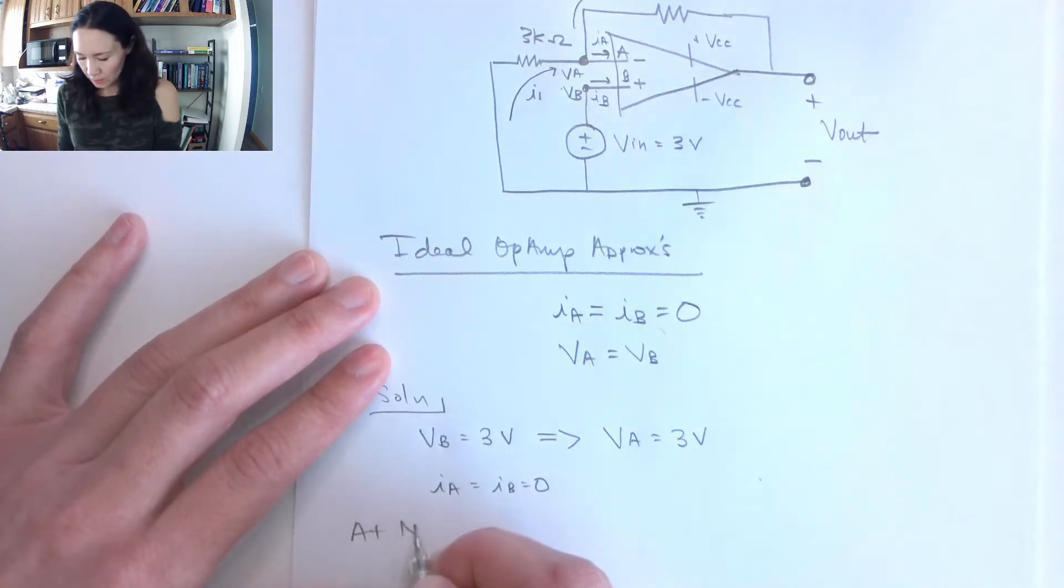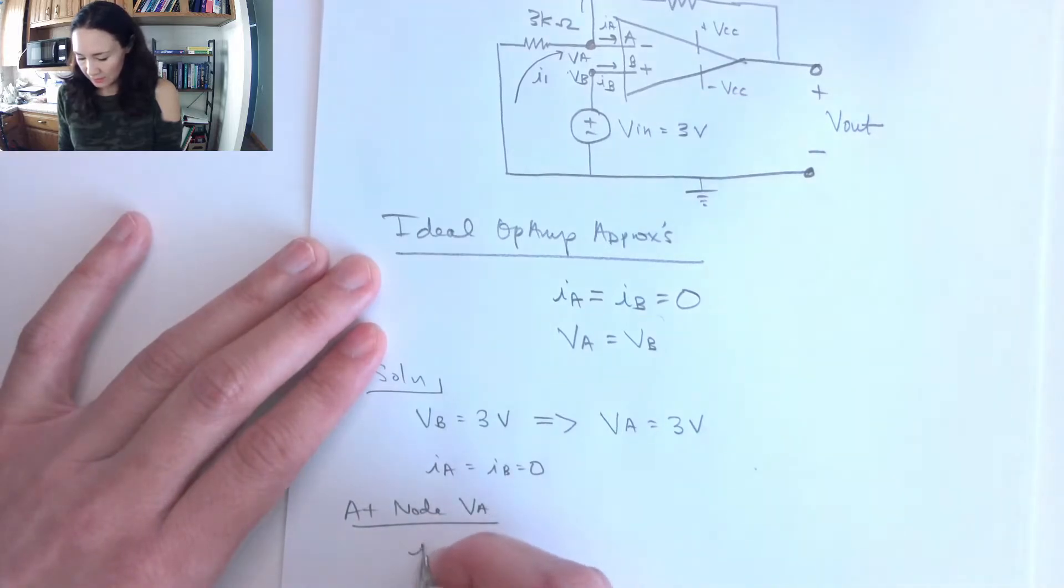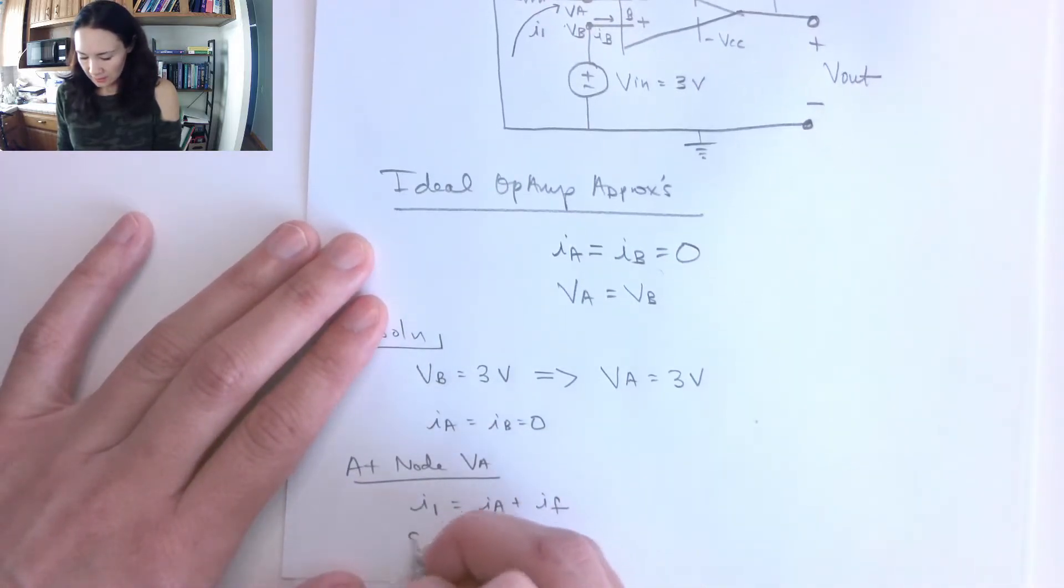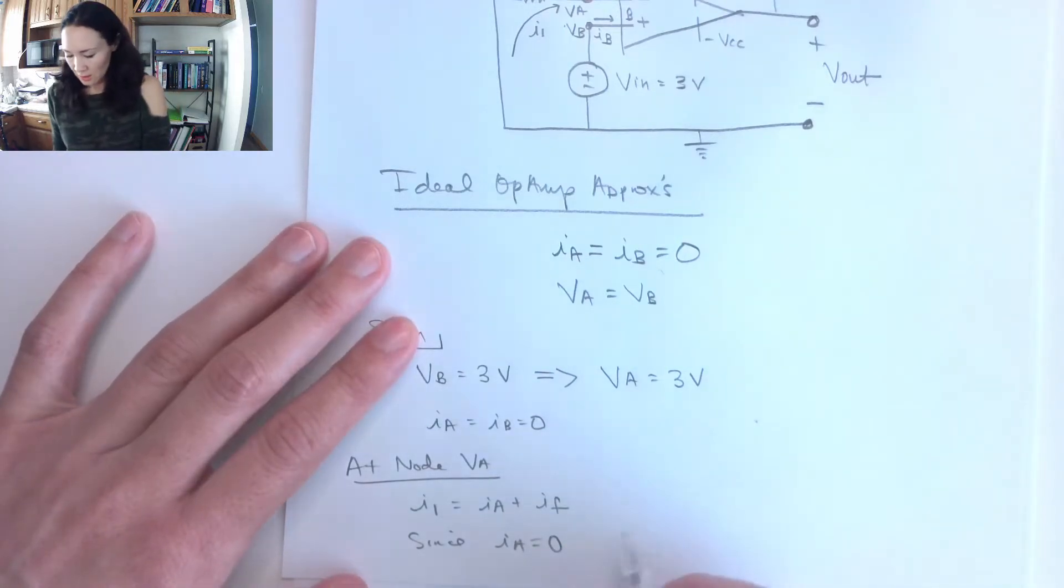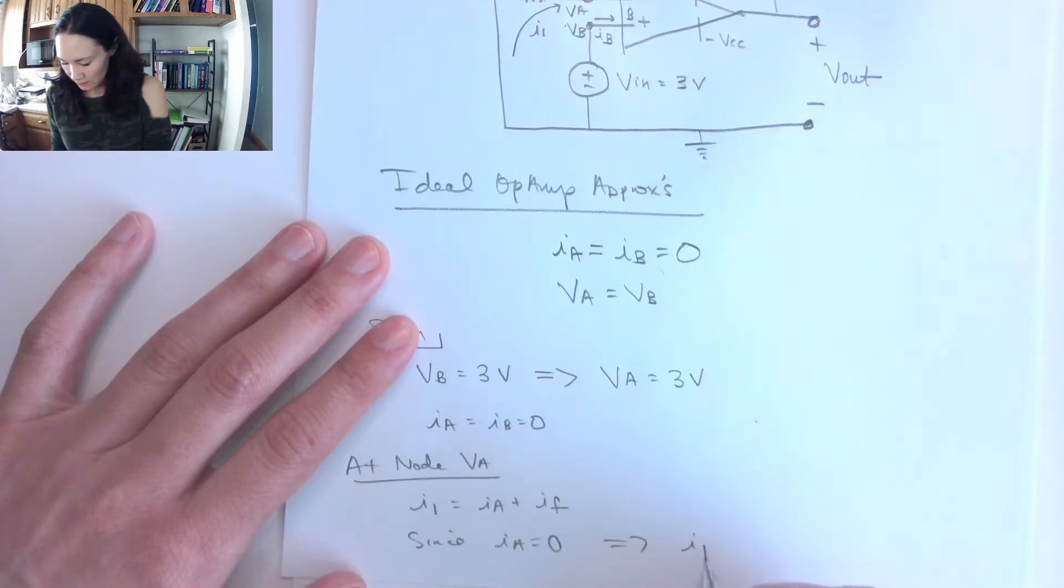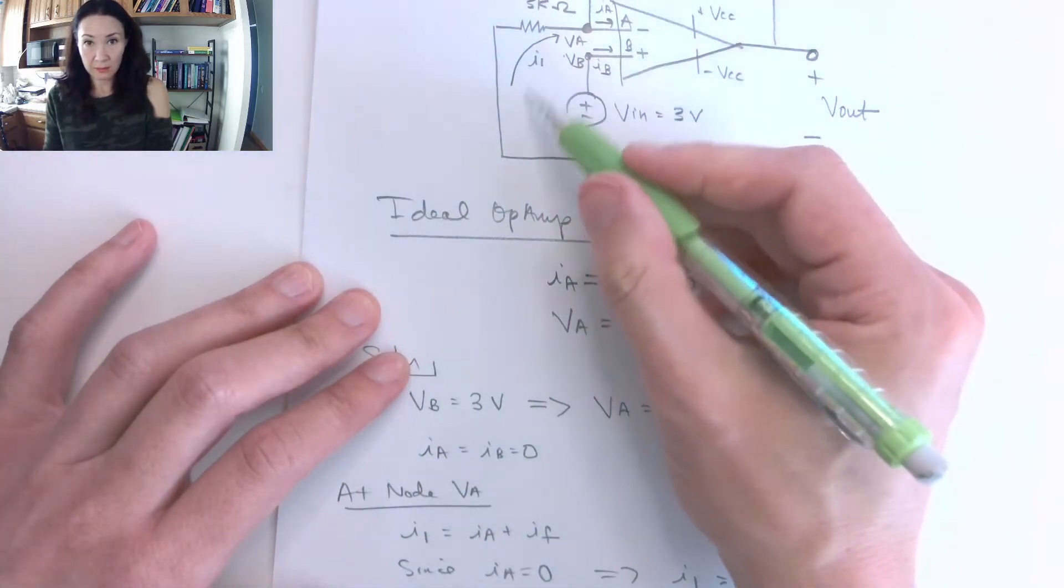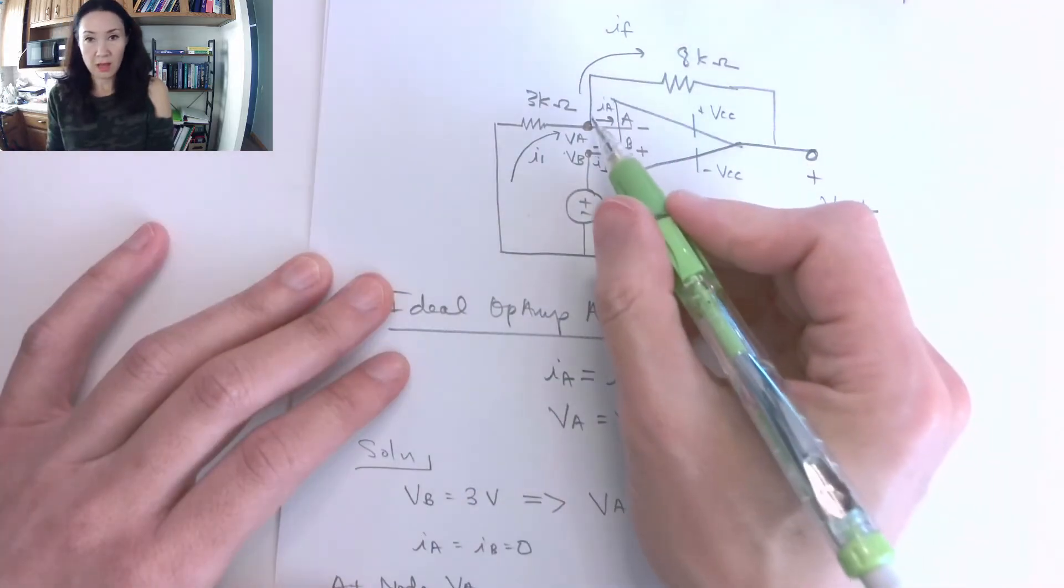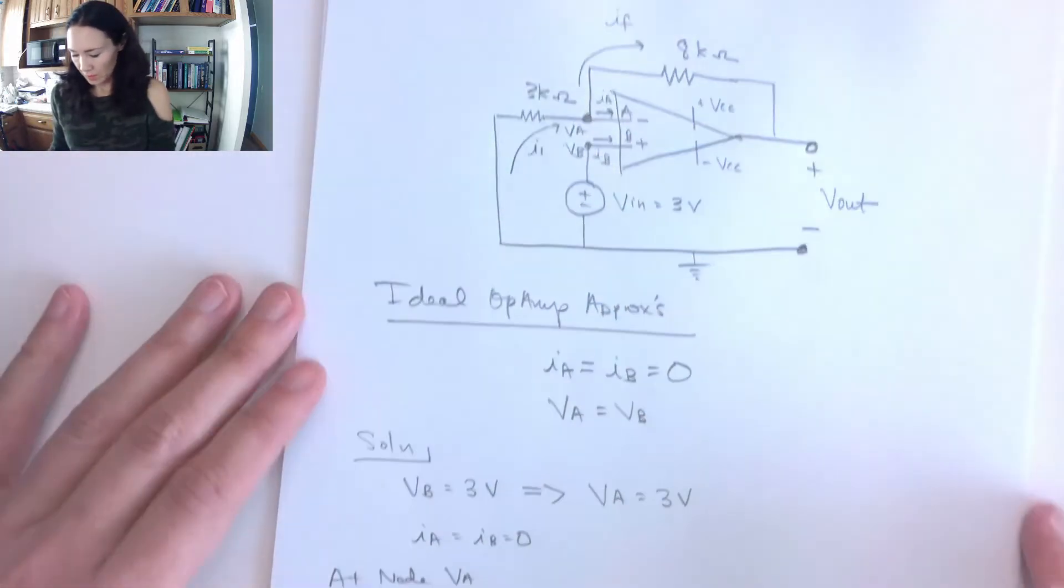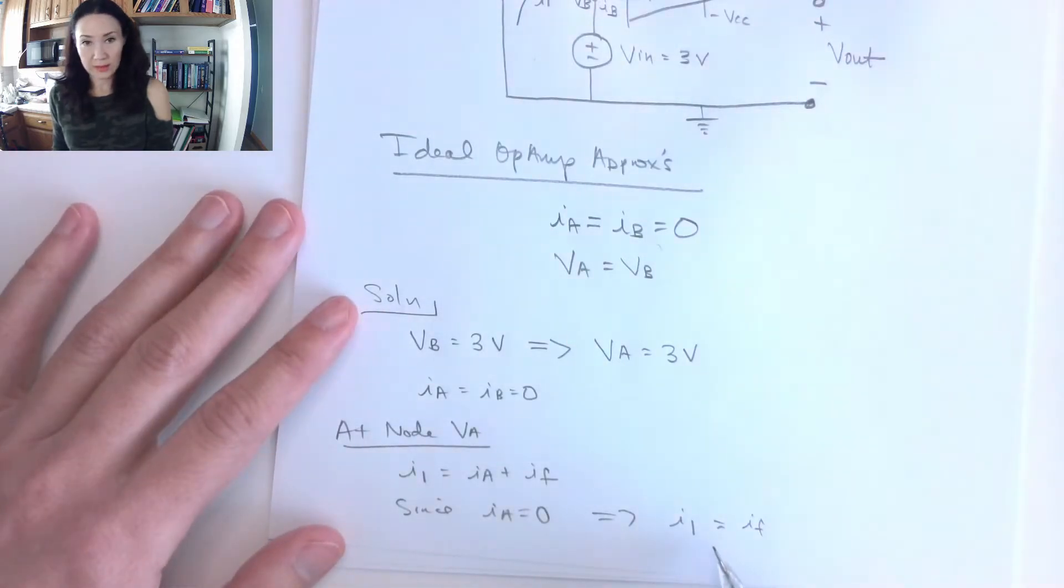So at node VA, we have that I1 is equal to IA plus IF, but since IA is equal to zero by the ideal op-amp approximation, we can say that actually all the current that takes the path up to this node is going to come up this branch here. So we have I1 is equal to IF.